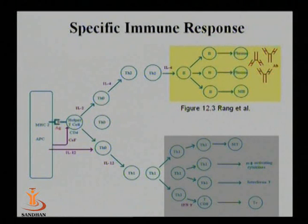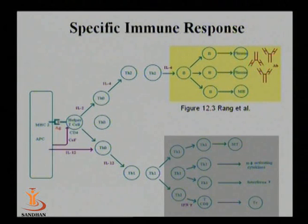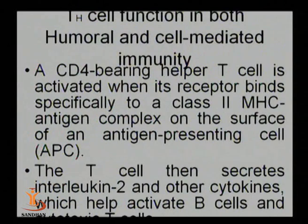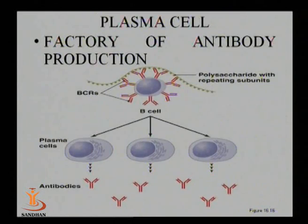T cytotoxic cells proliferate and release cytotoxins — this is cell-mediated immune response. Initially T helper cells are considered Th0 cells. When they induce cell-mediated immune response and release interleukin-12, they are the Th1 subset. Another type, Th2 subset, releases interleukin-4 and induces antibody-mediated immune response.